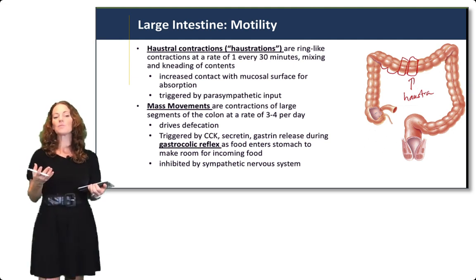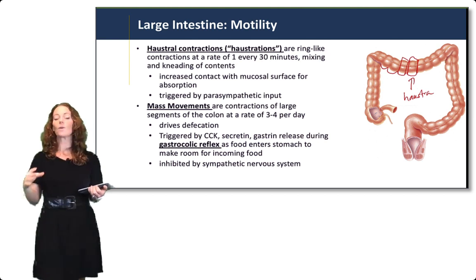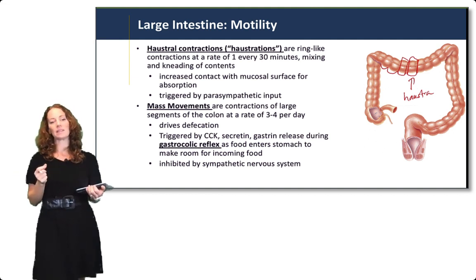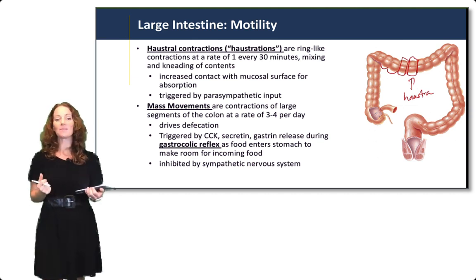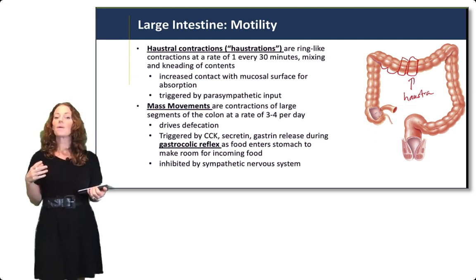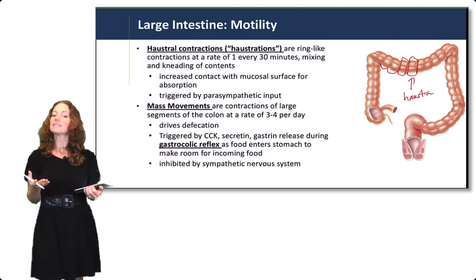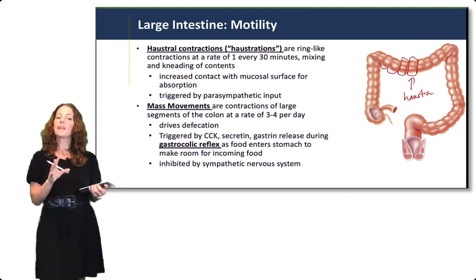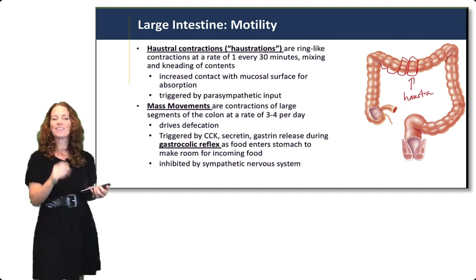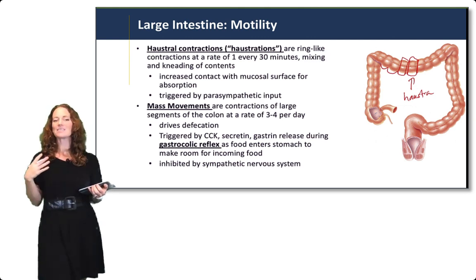Mass movements are the slowest and largest of all movements in the GI tract — contractions of large segments of the colon at a rate of about three to four contractions per day. These large, slow movements help drive defecation and are triggered by hormones and the gastrocolic reflex. They are triggered by enterogastrones — cholecystokinin and secretin — and also by gastrin release, which occurs when food enters the stomach. That is the gastrocolic reflex: food enters the stomach and sends a hormonal signal to the colon saying we have new food coming in, get rid of the old stuff to make room.